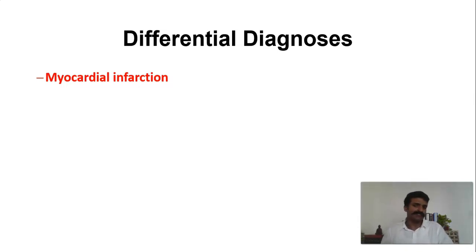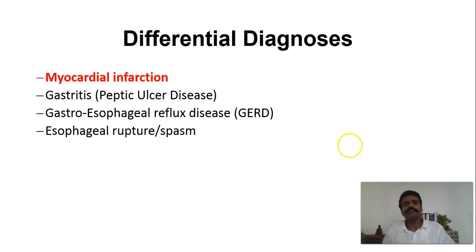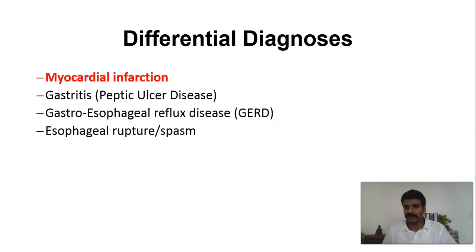But what other conditions can present mimicking a myocardial infarction? Most commonly it is to do with the gastroesophageal region — either gastritis, that is peptic ulcer disease, or gastroesophageal reflux disease — very, very common conditions. Esophageal spasms and esophageal ruptures are a little rarer, but they too can present in a similar fashion.